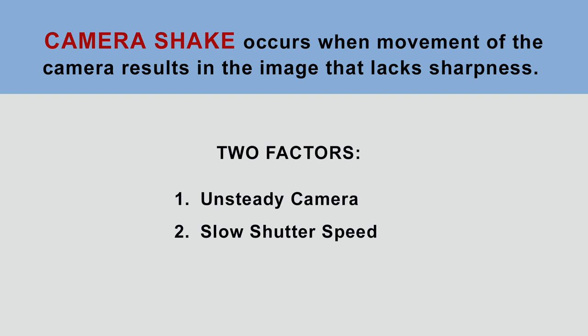Camera shake occurs when movement of the camera results in an image that lacks sharpness. There are two factors whose combination comes into play: an unsteady camera and a slow shutter speed. It is as simple as this — if you move the camera during exposure at slow shutter speed, you can end up with blurry photos. Depending on how slow your shutter speed is, it can happen even during the slightest movement.